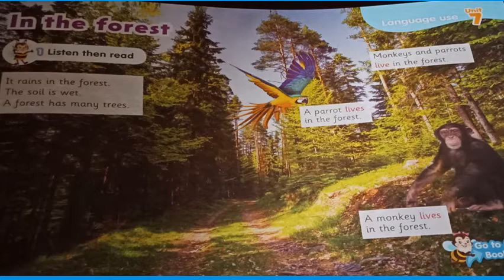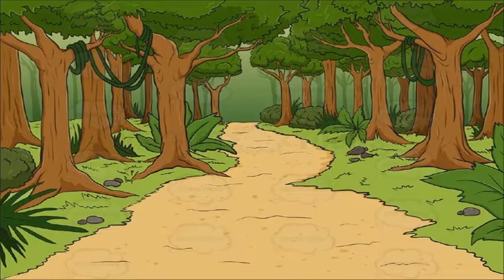What other animals do we see here? What is this lovely bird? It's a parrot! A parrot lives in the forest. And who's that? Hello, monkey! Monkeys and parrots live in the forest. A monkey lives in the forest and a parrot lives in the forest. What is this — a desert or a forest? Yes, you're correct, it's a forest!